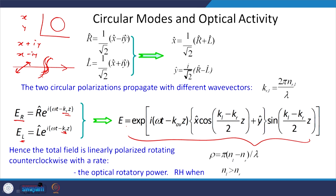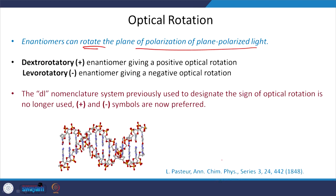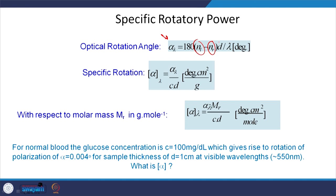The optical rotatory power is right-handed when the rotation is positive, and can be negative as in circular dichroism. The optical rotation angle is given by a relation dependent on n_L and n_R — the refractive indices for left and right circularly polarized light. Specific rotation is given by a relation involving concentration and d, the thickness of the cell: a larger thickness gives larger specific rotation. The molar mass gives another relation. As a homework, calculate alpha for a normal blood glucose concentration.